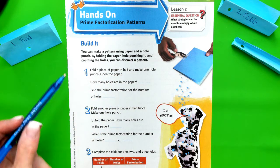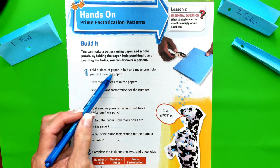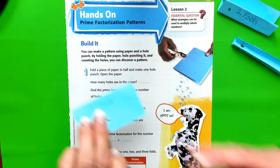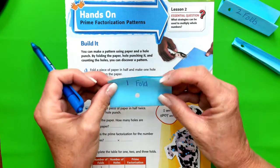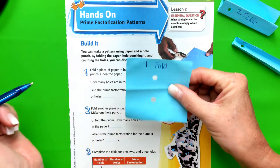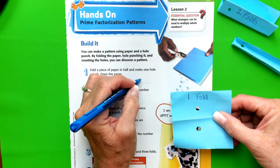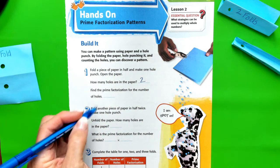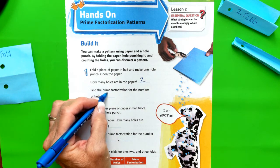So that's exactly what I've done here. Fold a piece of paper in half and make one hole punch, and then open the paper. So here I've folded, you can see I've got one hole punch. I open the paper, and how many holes do I have? I have two holes in the paper. So the prime factorization for that number is two.